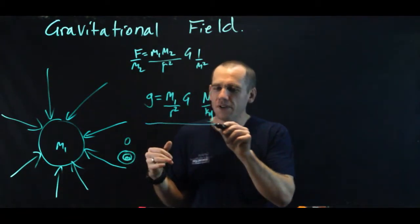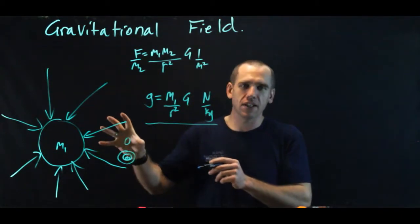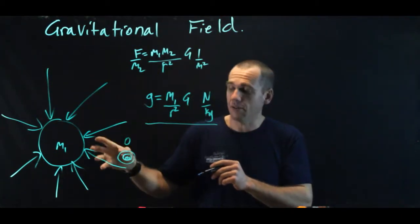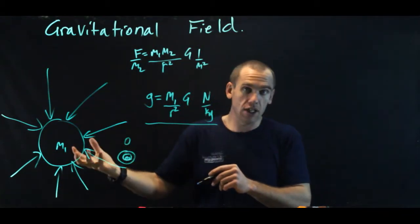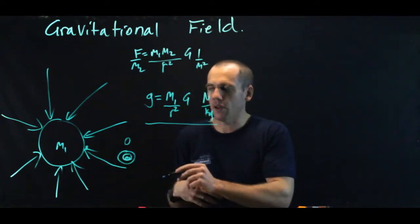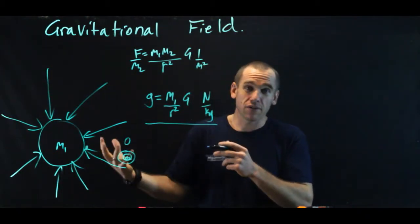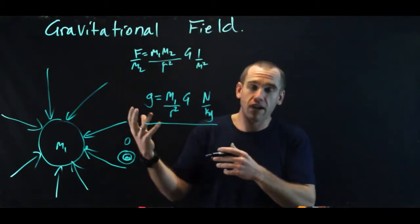And what gravitational field strength tells us is it tells us how a mass in a gravitational field will be accelerated. So anything in earth's gravitational field will be accelerated at g, 9.8 meters per second per second, as long as we're near the surface of earth. If we're around some other object, some other planet, some other body, then it will have a different gravitational field.